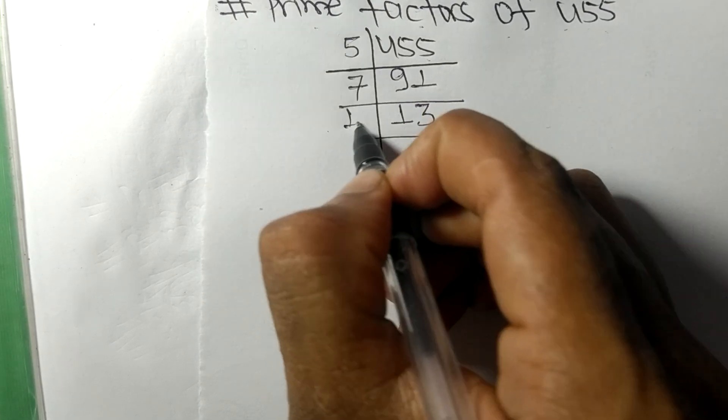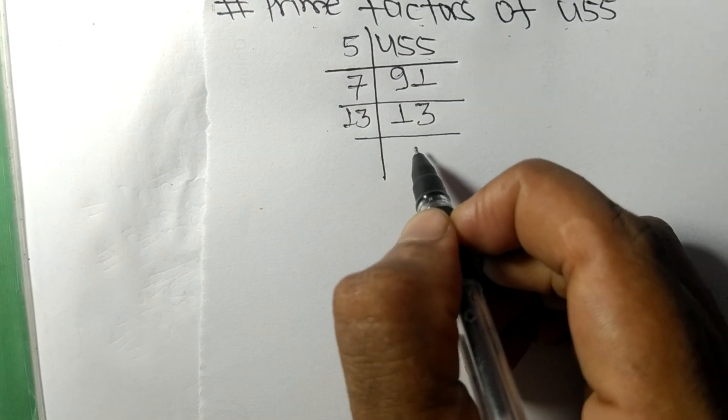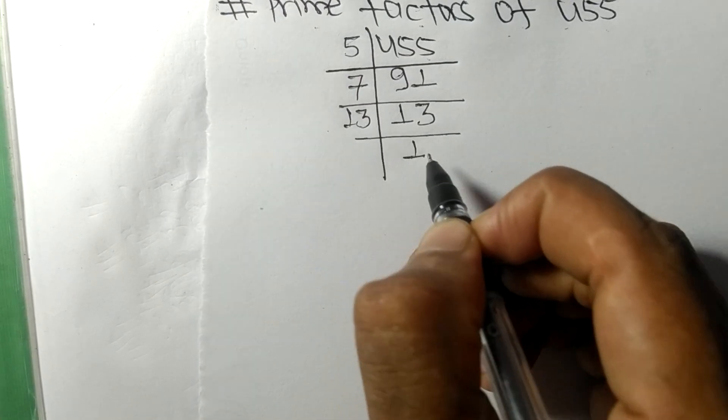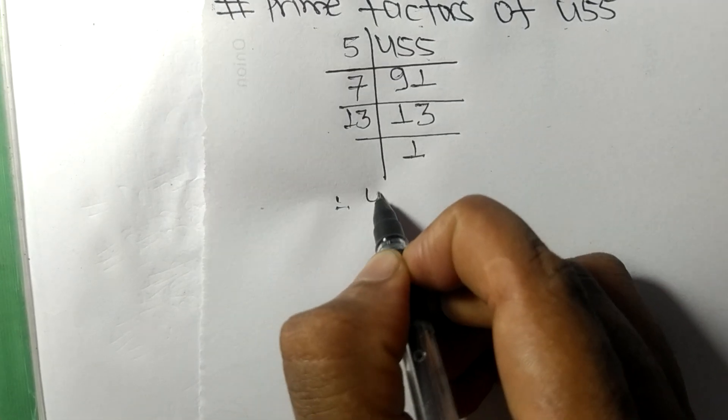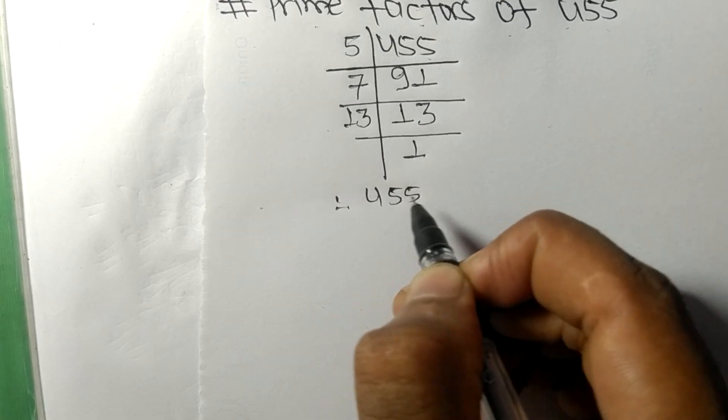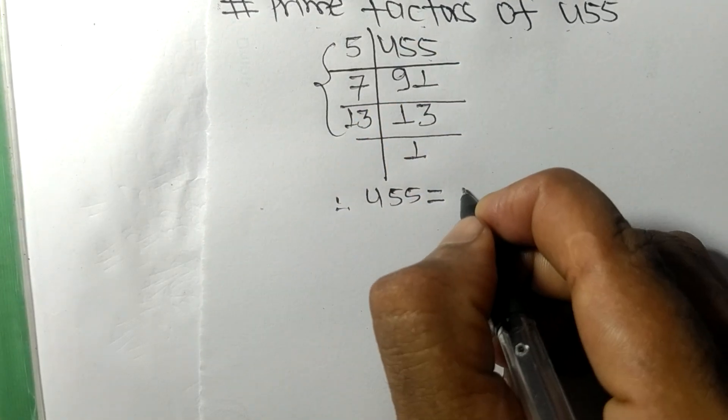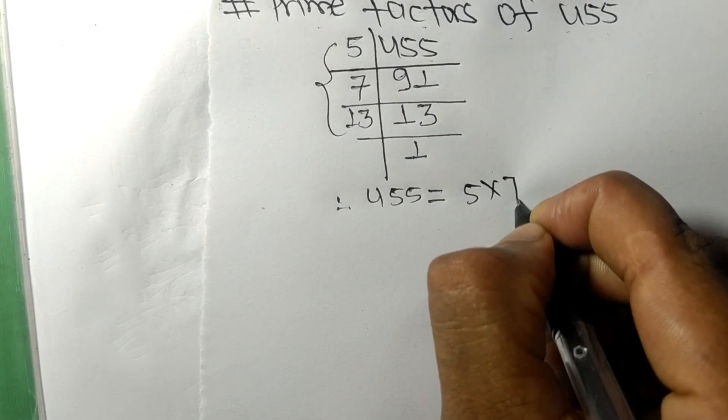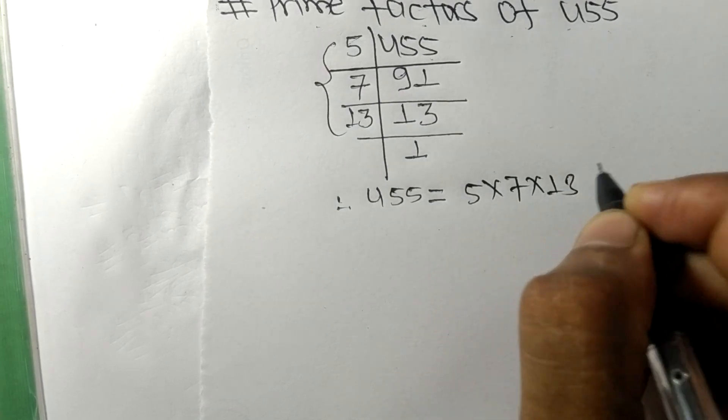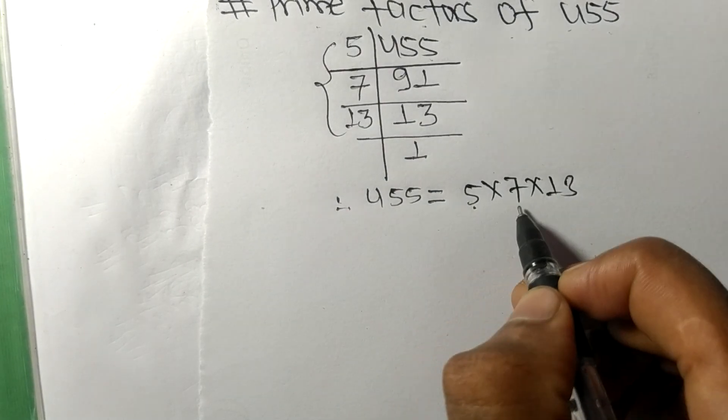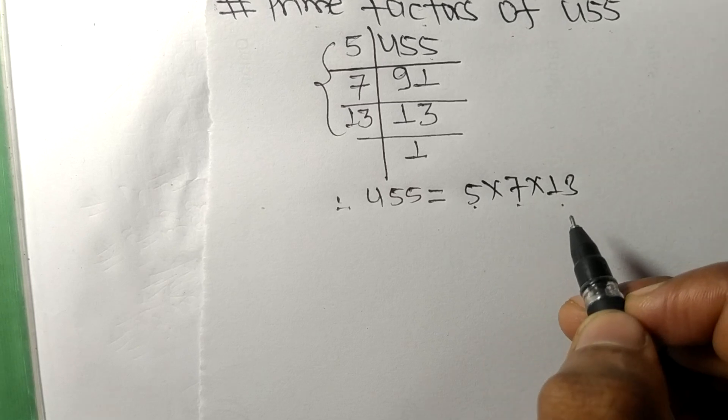It is divisible by 13 itself and we get here 1. Therefore, 455 is equal to, from this side, 5 times 7 times 13. So 5, 7, and 13 are the prime factors of 455.